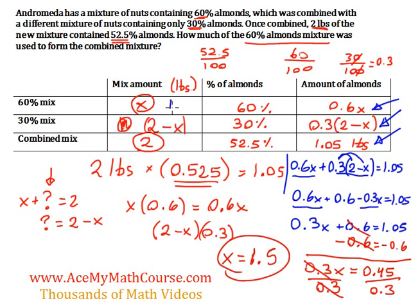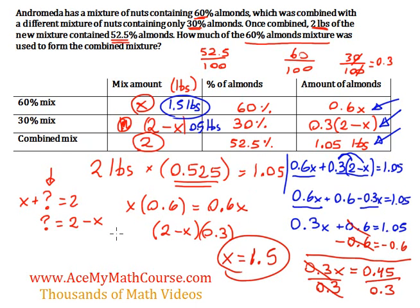So the answer is: the mix amount of the 60% almonds mixture is 1.5 pounds. If the question also asked how much of the 30% almonds mixture was used, we know it's 2 minus x. With x equal to 1.5, that gives 0.5, or half a pound. Hopefully that made great sense — please check out more videos for additional practice. Good luck!